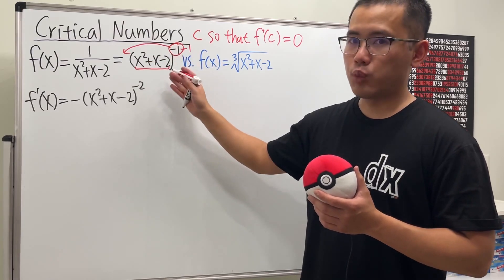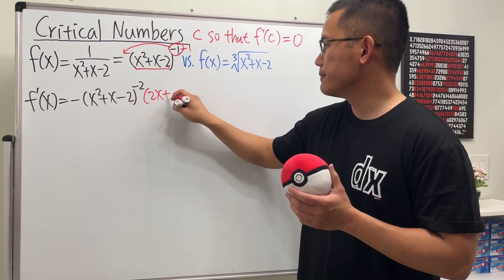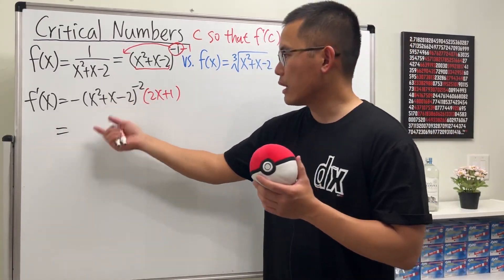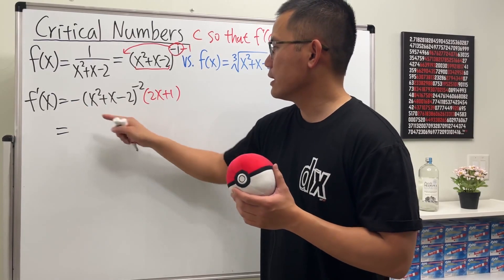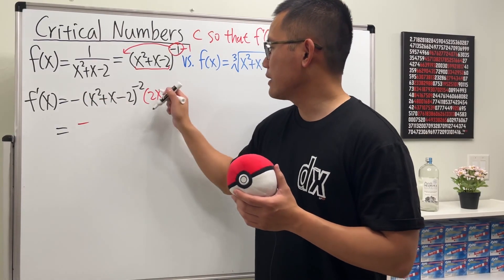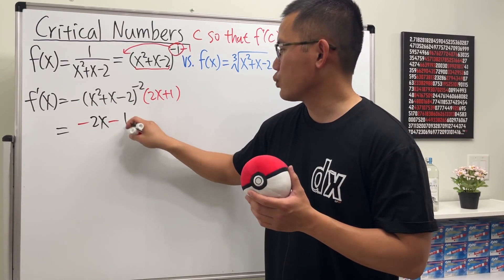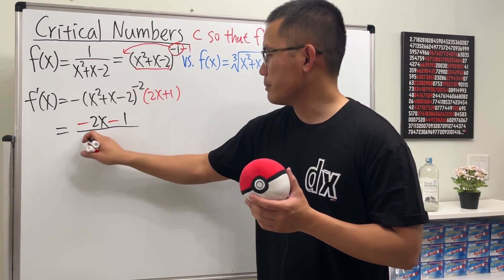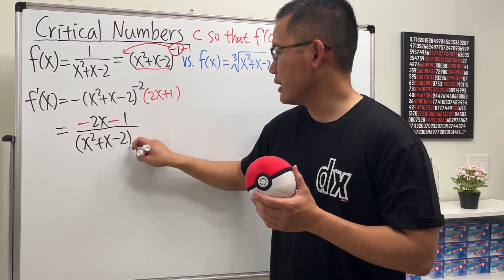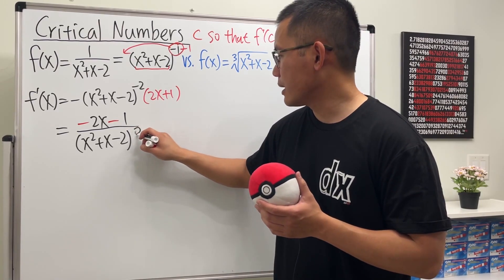The derivative of the inside is (2x + 1) — it has two terms so be sure to use parentheses. Bringing the negative exponent down to the denominator, we get: negative (2x + 1) on top, over (x² + x - 2) squared on the bottom.